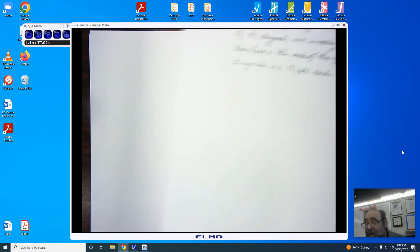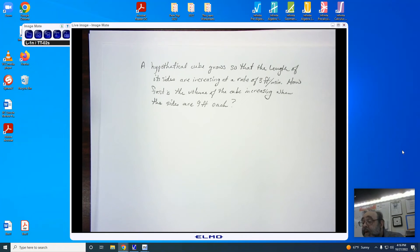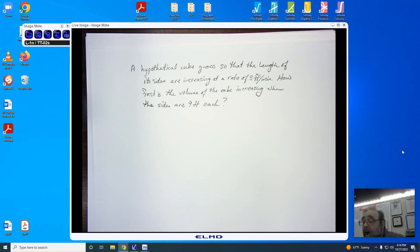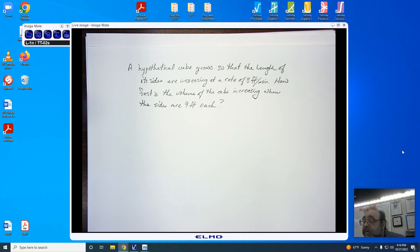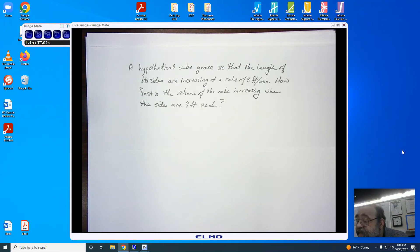Here is our problem. A hypothetical cube grows so that its length on each side are increasing at a rate of 3 feet per minute. How fast is the volume of the cube increasing when the sides are 9 feet each? Let's start by drawing our picture.